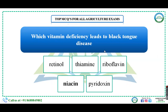Which vitamin deficiency leads to black tongue disease? Options: retinol, thiamine, riboflavin, niacin, pyridoxine. Retinol means vitamin A, thiamine means vitamin B1, riboflavin is vitamin B2, niacin is vitamin B3, and pyridoxine is vitamin B6. Deficiency of vitamin A causes night blindness, B1 deficiency causes beriberi, riboflavin deficiency causes cracks on the skin, and niacin deficiency causes black tongue disease or pellagra. So the answer is niacin (vitamin B3).